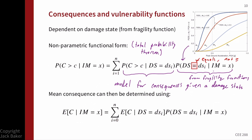Sometimes we only need a mean consequence, such as a mean repair cost. A similar formula sums the expected value of consequences given each damage state, times the probability of that damage state equaling DSi. The left-hand side then gives the expected value of consequences given IM equals x, rather than a probability of exceedance. When mean losses are sufficient, this simpler form works fine.